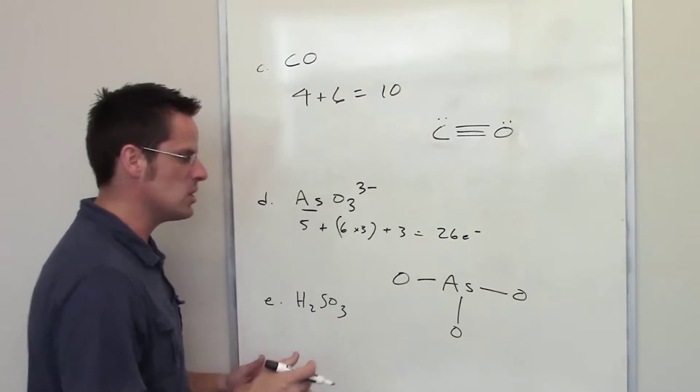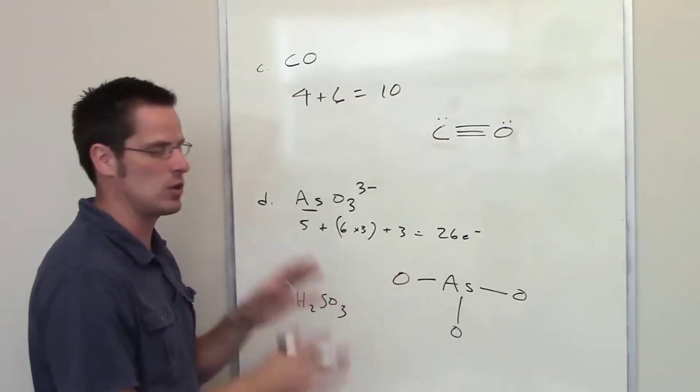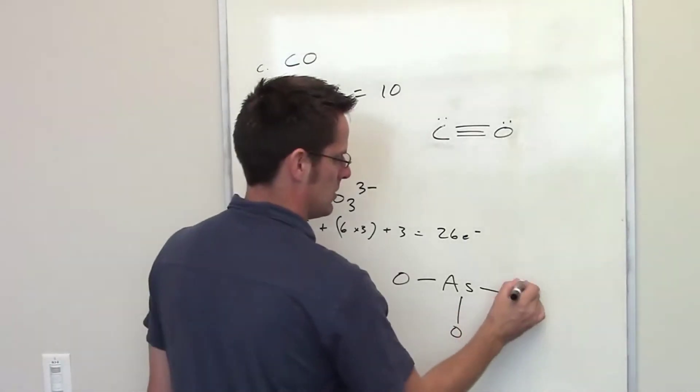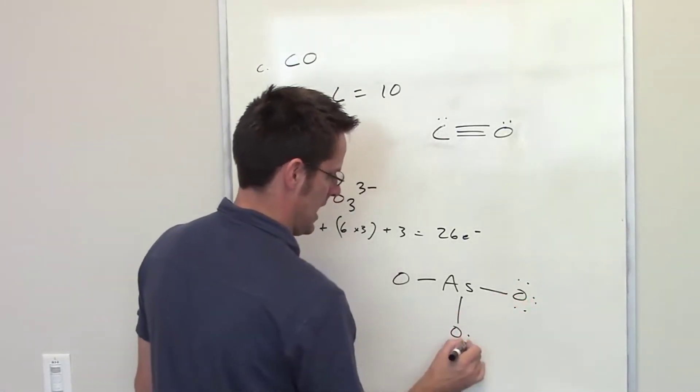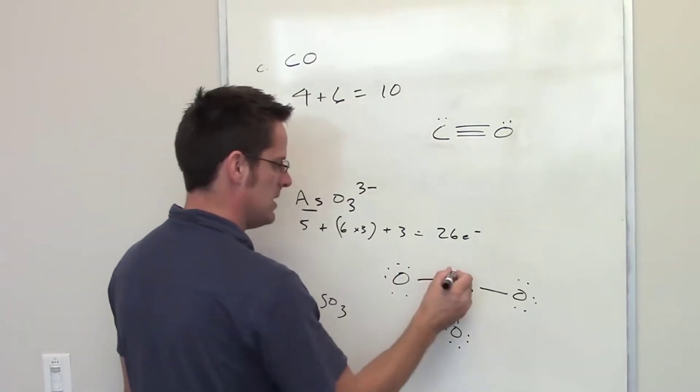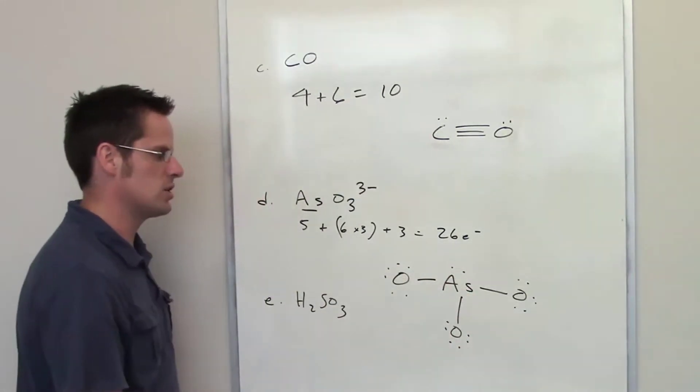I've got 20 left. So what I'm going to do now is I'm going to throw down the remaining 20 electrons on all the atoms, attempting to give them all 8 electrons. So we'll go ahead and go 2, 4, 6, 8, 10, 12, 14, 16, 18. And then, for my 20, I can throw them on the arsenic.